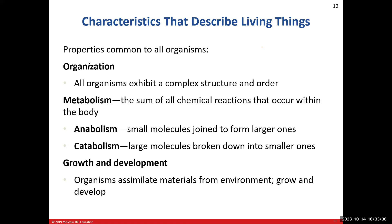Metabolism is basically chemical reactions within the body. There are two types of metabolism. You have anabolism, which takes small molecules and puts them together to form larger ones — anabolic steroids, for example, help to build up skeletal muscle tissue. The other type is catabolism, where large molecules are broken down into smaller ones — for example, when you eat something you start to digest it, you start to break it down. Our metabolism is going to contain either anabolism or catabolism.